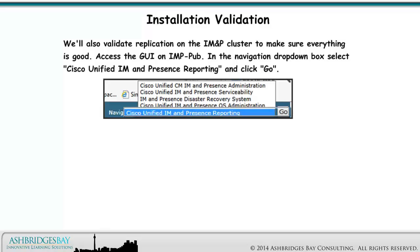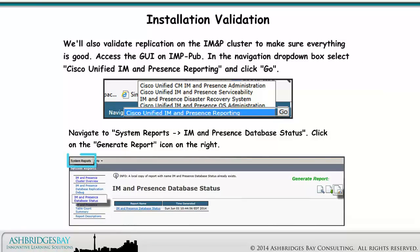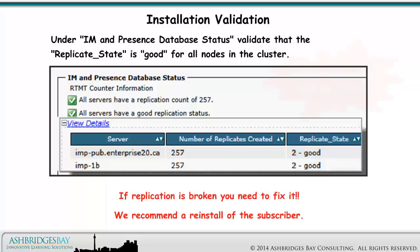We'll also validate replication on the IM&P cluster. Access the GUI on IMP Pub. In the Navigation drop-down box, select Cisco Unified IM and Presence Reporting and click Go. Navigate to System Reports > IM and Presence Database Status. Click on the Generate Report icon on the right. Validate that the Replicate state is good for all nodes in the cluster. If replication is broken, you need to fix it — we recommend a re-install of the subscriber.